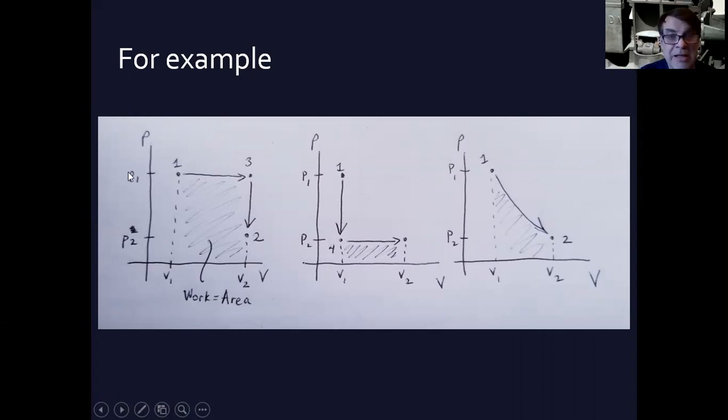So, for example, I can keep the pressure the same, but increase the volume first and then decrease the pressure down to two. Now, I've gotten from one to two, same destination, but the area under—okay, this is the work. The work done is the area under.